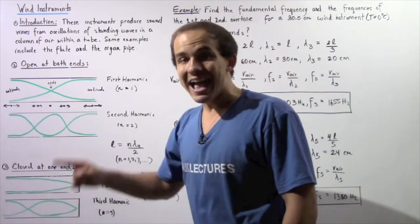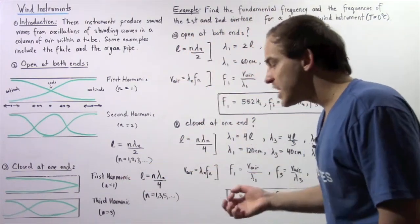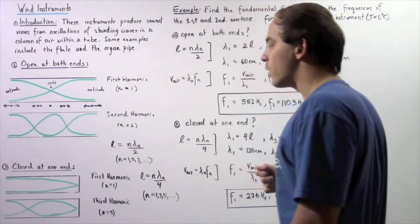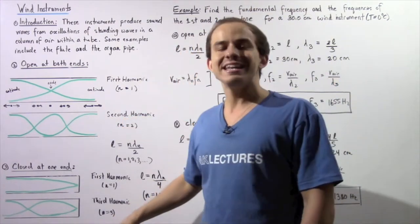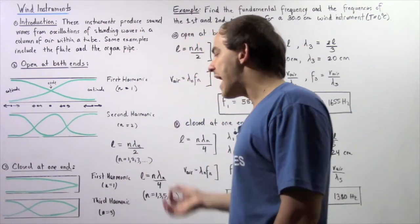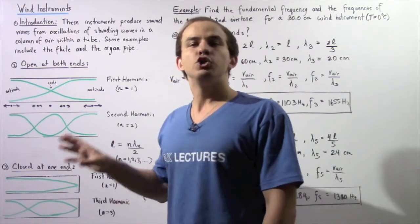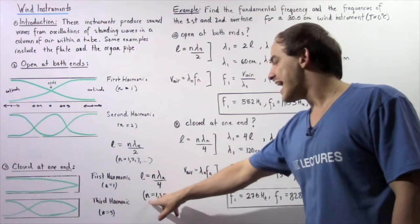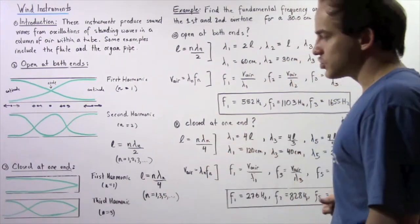Moving on to the next harmonic, notice that the even harmonic values for a pipe closed at one end do not produce standing waves. So we only consider n equals 1, 3, 5, 7, 9, 11, and so on.